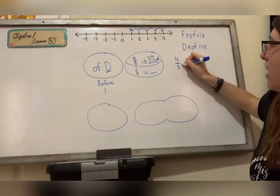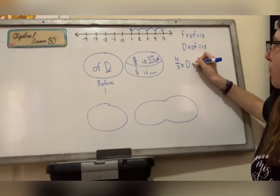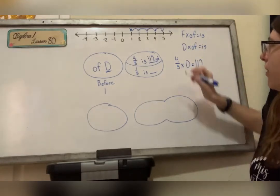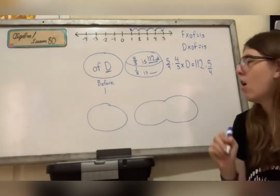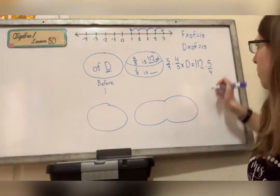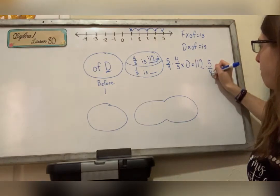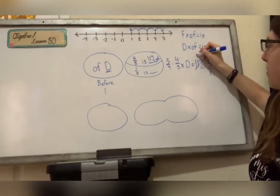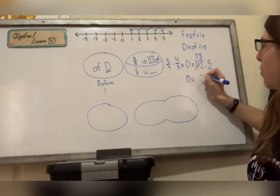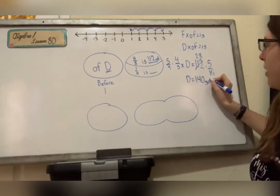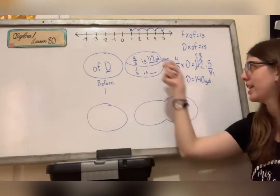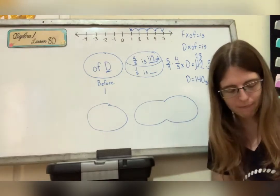So we set it up with our fraction problem. Fraction four fifths times of, which would be D, is 112. Multiply by the reciprocal. Let's see if this divides evenly. Yes, it does. So that would be 28 times 5, which would be 140 yards. Quick mental check. This number should be bigger than this number, and yes it is. So we did our problem correctly.